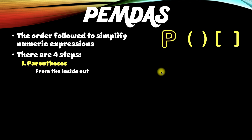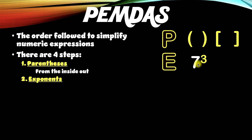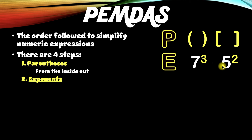The second step in the order of operations is shown by the letter E, which stands for exponents. So when you have something like seven to the third, that three is the exponent. Any time you see an exponent in an expression, that's the second thing to get done after parentheses. For example, five to the second power — the base is five and the exponent is two — means we multiply five times five.